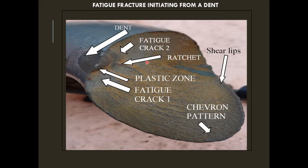Here you can see the ratchet — the convergence of two fatigue cracks. Afterwards, the spring can no longer bear the load and fractures with a chevron pattern. The chevron pattern indicates a fast fracture. At the ends you can also see shear lips, which means the loading conditions are very high — high enough to convert the fracture from the chevron pattern to the shear mode.